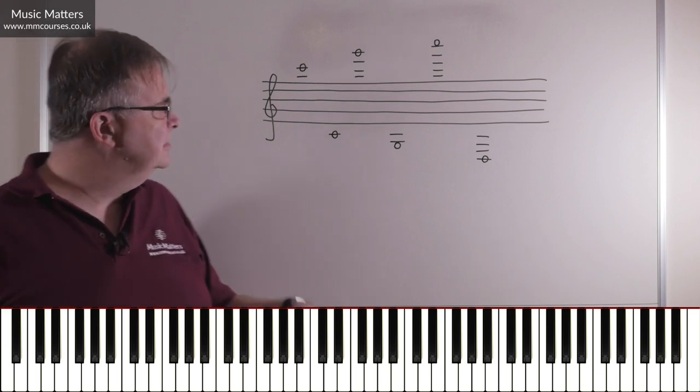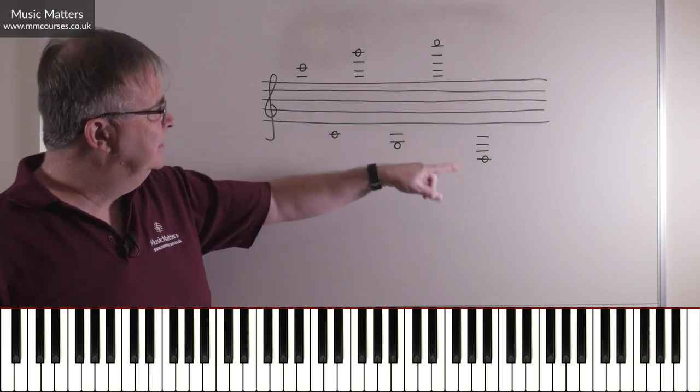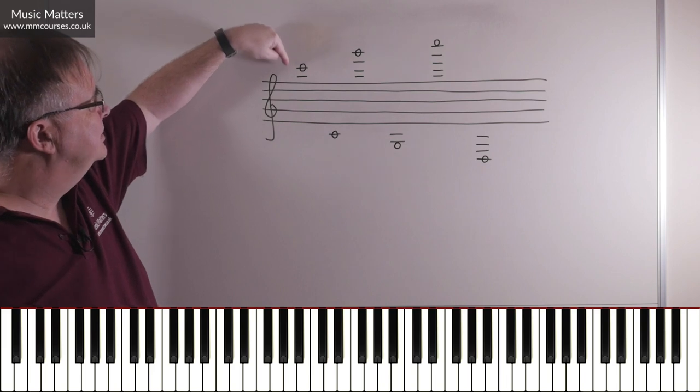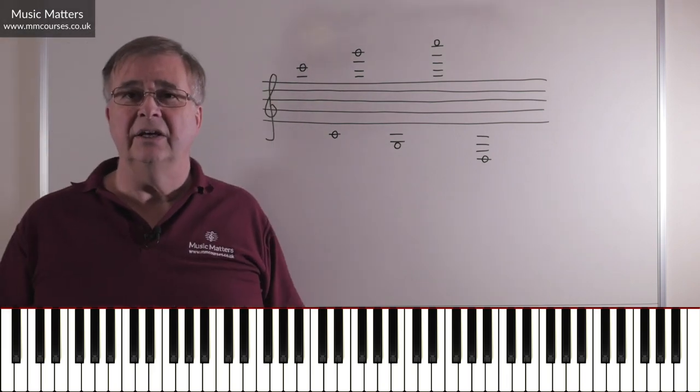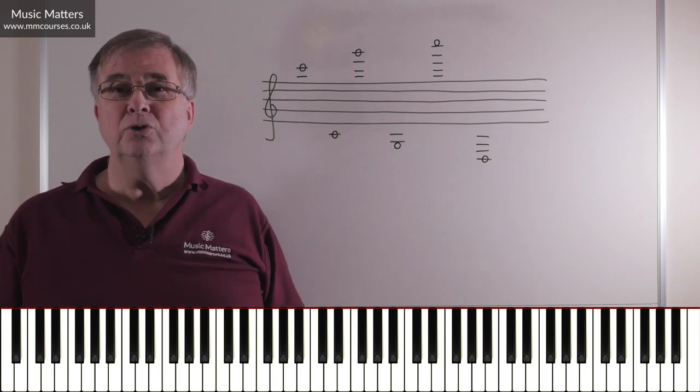But there's quick fire methods. Here's middle C, work down the lines from there. Here's C on the second ledger line above the treble clef, so I can quickly get to these other notes. That would help you to read them quicker.